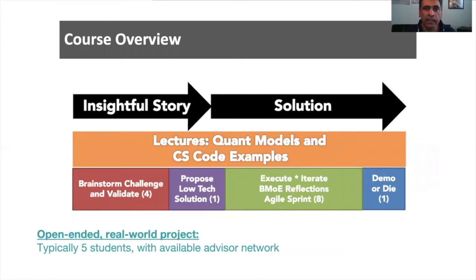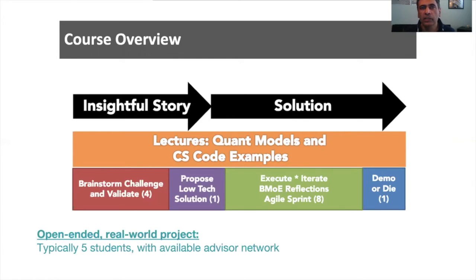This course is also designed in a very innovative way. As shown on this diagram, there will be lectures covering theory and computer science along with code examples, running through the entire length of the course. Meanwhile, in the first part of the course, teams are organized together to create what we call an insightful story about what they'd like to build in their project — a narrative or description of the concept. This story does not have code, and we call this a low-tech demo or low-tech demonstration.